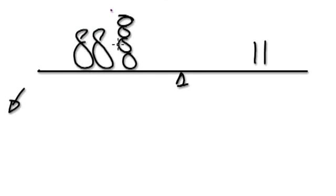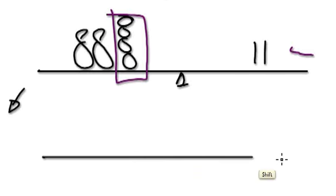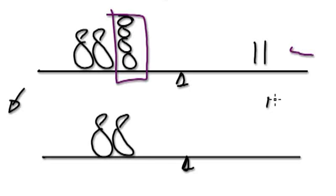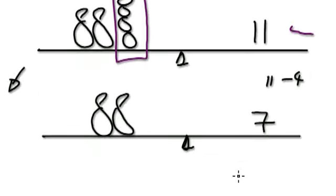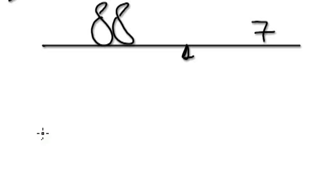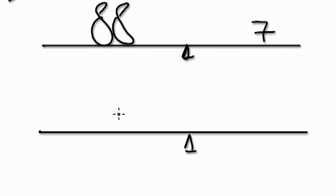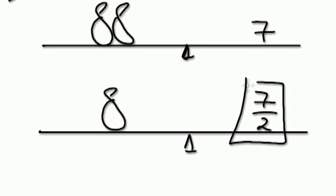Now we're going to take four suites from this side and four suites from this side. We'll have two bags, and 11 take away four on this side, which will be seven suites. Now we want one bag on its own, so we divide both sides by two. So it would be seven over two — we can leave it as a fraction. The answer is seven over two, which is three and a half in effect, but you can just leave it as a fraction.